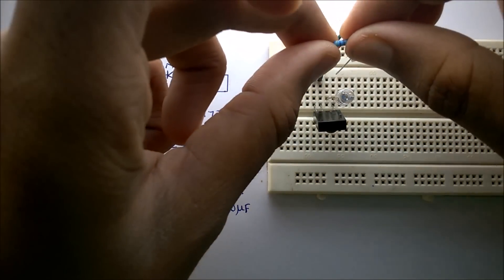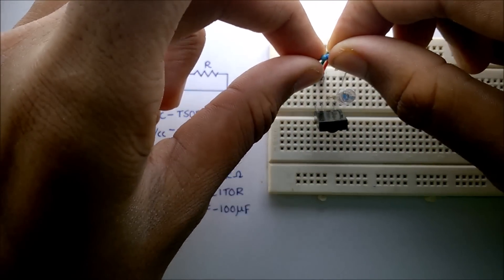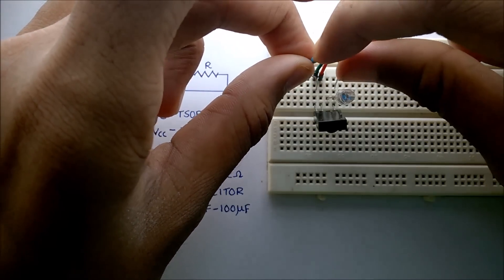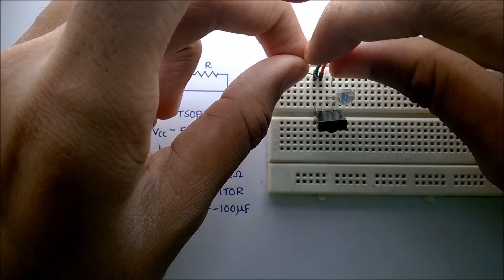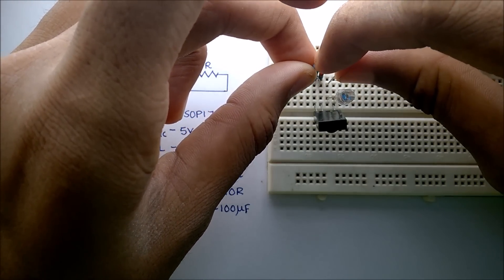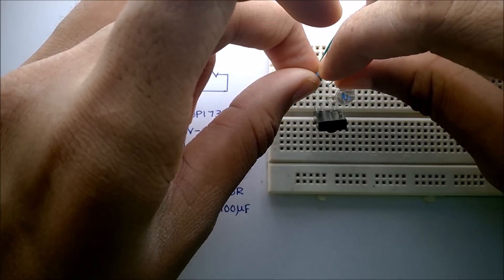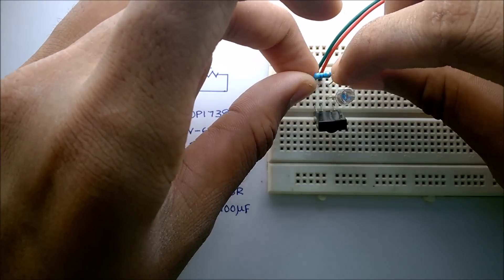The resistor will be between the positive 5 volt supply and the positive terminal of the LED.